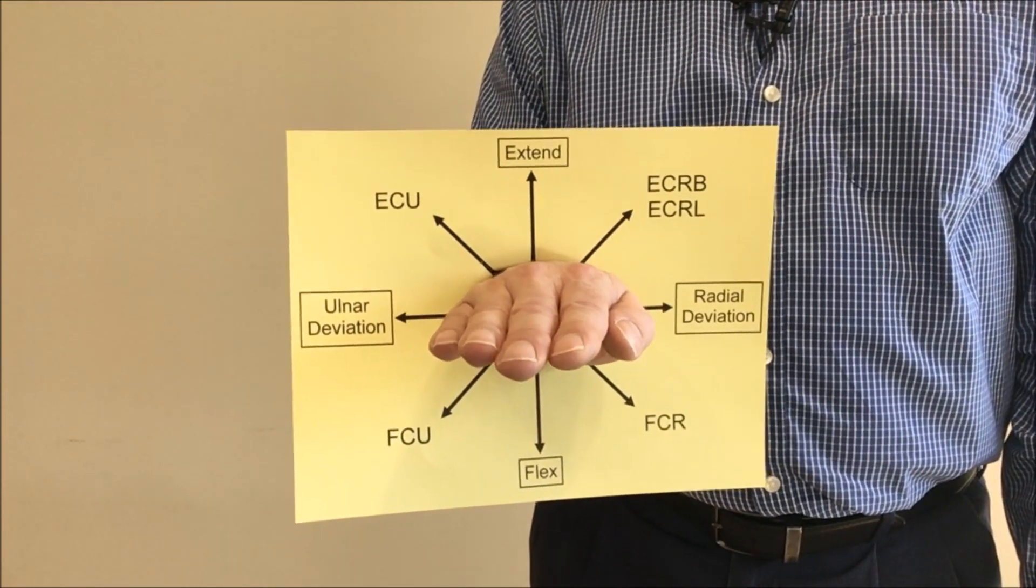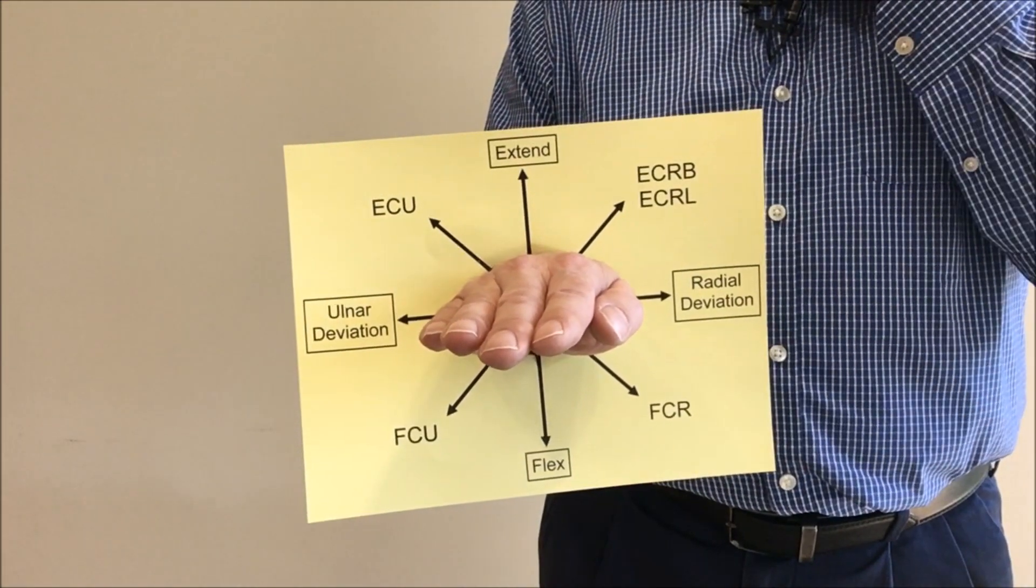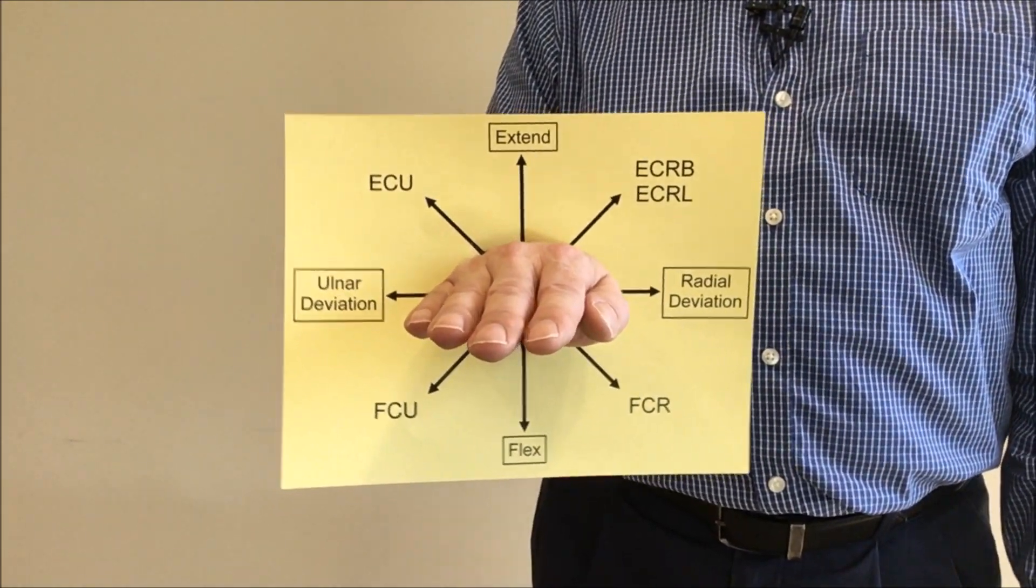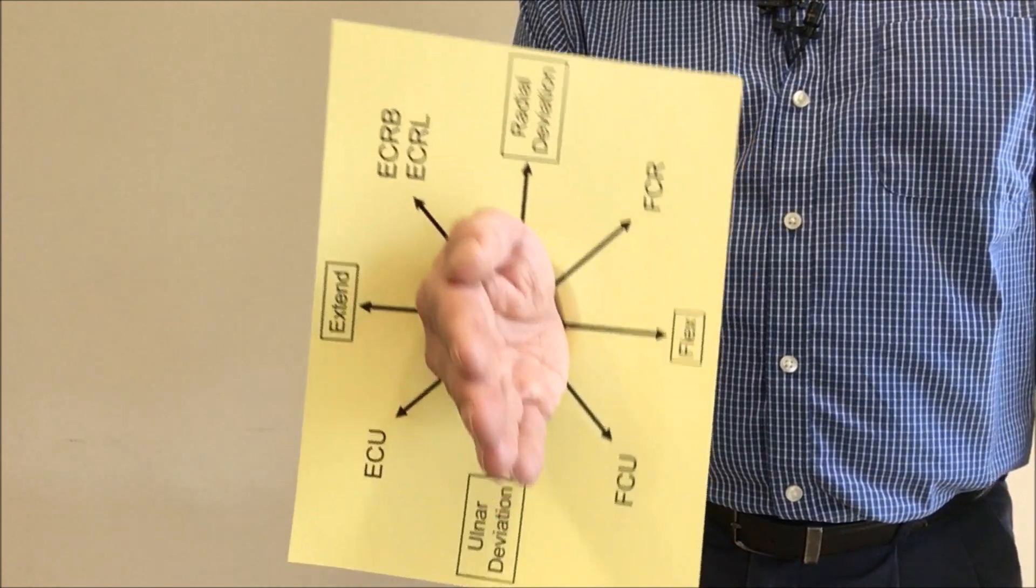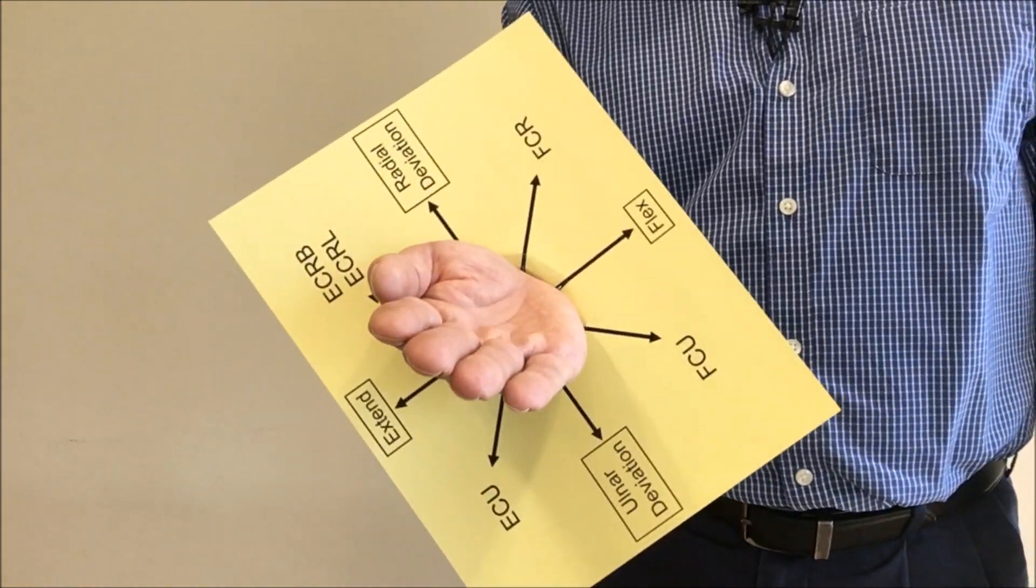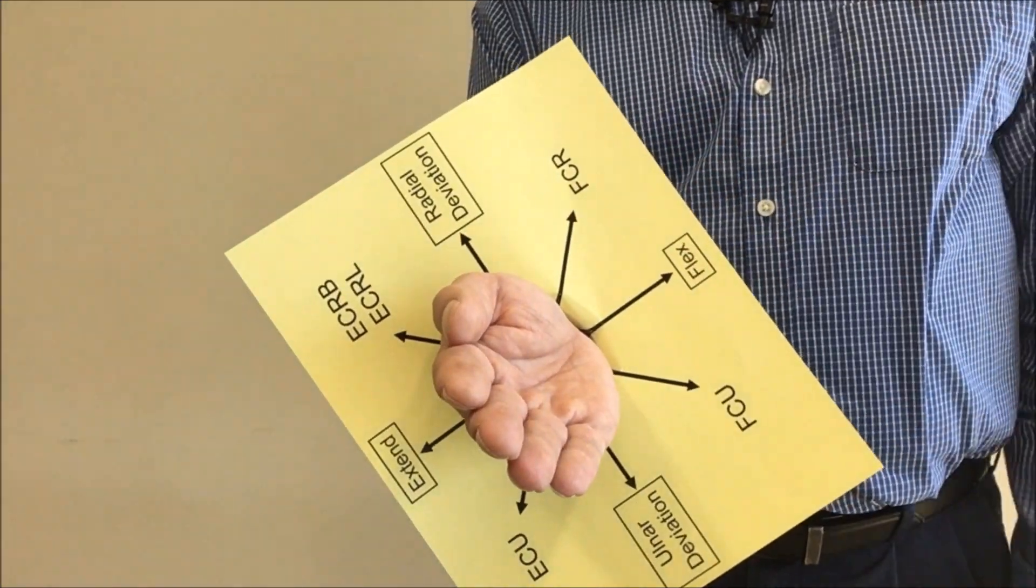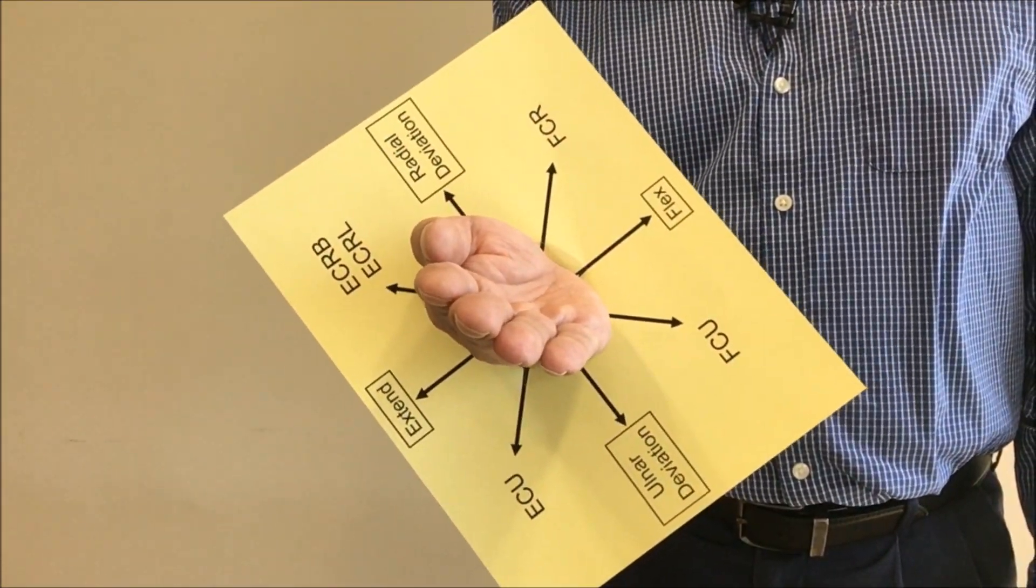In order to get the direction of pull for extensor carpi radialis brevis and longus and also flexor carpi ulnaris parallel to the floor, I just have to keep rotating my forearm about another 90 degrees. So I'm kind of halfway between fully supinated and neutral. And when I'm kind of halfway between.